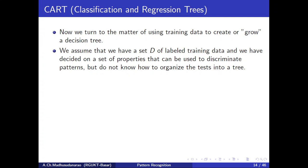Along with the feature values, the label is also there. For example, if that is banana, along with the 4×1 feature vector we will have the label 'banana'. We dump all these labeled training samples into the decision tree classifier, which will learn the structure of the decision tree from these labeled training sets.